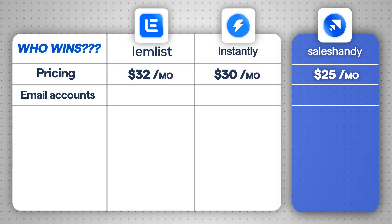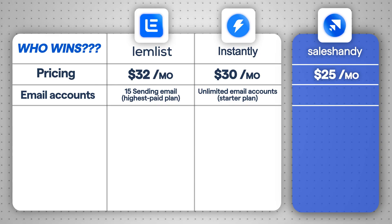The next important factor is email accounts. With Instantly, you can connect unlimited email accounts even on their starter plan. Lemlist, on the other hand, limits you to just 15 sending emails on their highest paid plan. But if you are looking to scale your outreach, then this could be a deal breaker. And just like Instantly, Sales Handy also offers unlimited email accounts on its starter plan.